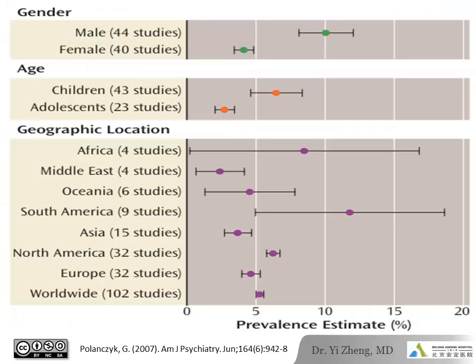The prevalence of ADHD is generally estimated as 5% for children under 18, and it might be higher among school-aged children. It affects boys more than girls. The question of whether ADHD is a culture-dependent disease is of some debate, and prevalence varies significantly according to demographic and geographic location. But the factors affecting prevalence studies are complicated, and the diagnostic criteria used and whether impairment is included appears to be the most important factor.